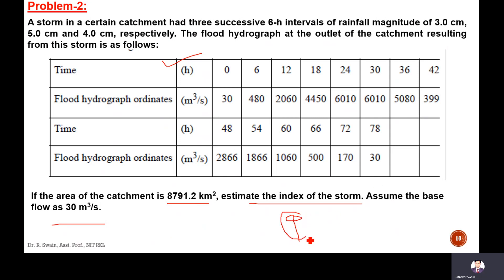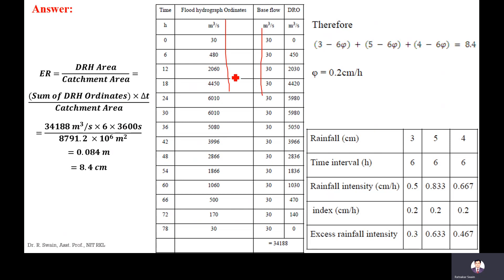The phi index is the rainfall intensity above which rainfall equals runoff — i.e., the rainfall that contributes to direct runoff. First, we calculate the direct runoff by deducting the base flow of 30 m³/s from the hydrograph ordinates to get the direct runoff hydrograph (DRH). Then, the excess rainfall is calculated by taking the ratio of the DRH area to the catchment area.